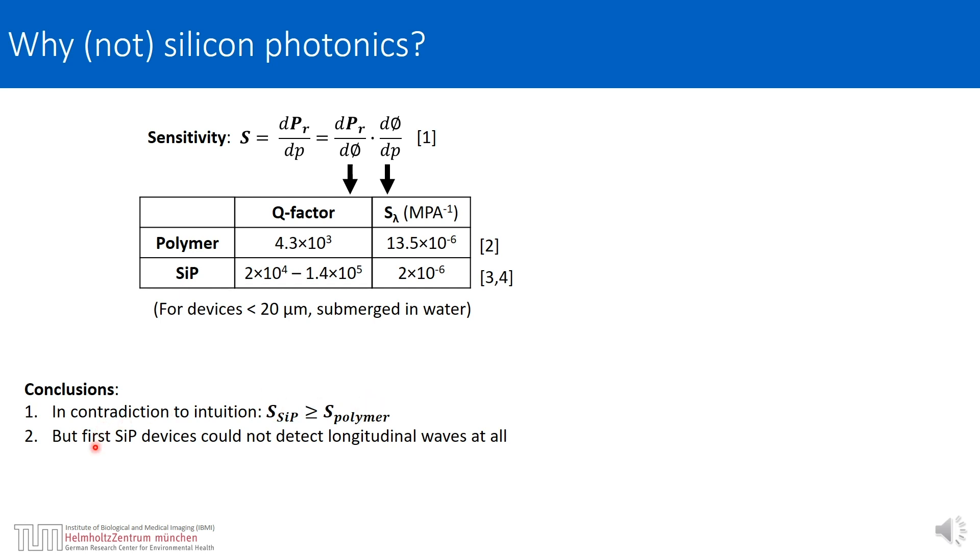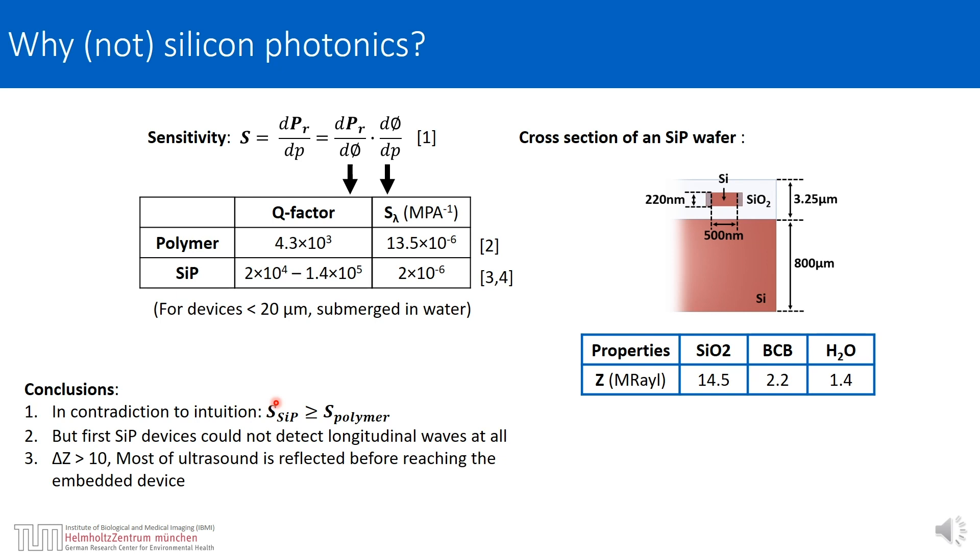The question arises why first silicon photonic structures could not detect longitudinal waves at all, and the reason lies in the design of those structures. Traditionally the silicon waveguide is embedded in a few millimeters of silica cladding. The acoustic impedance mismatch between the silica and water results in most of the ultrasound being reflected from the top surface of the chip before even reaching the resonator and being detected.